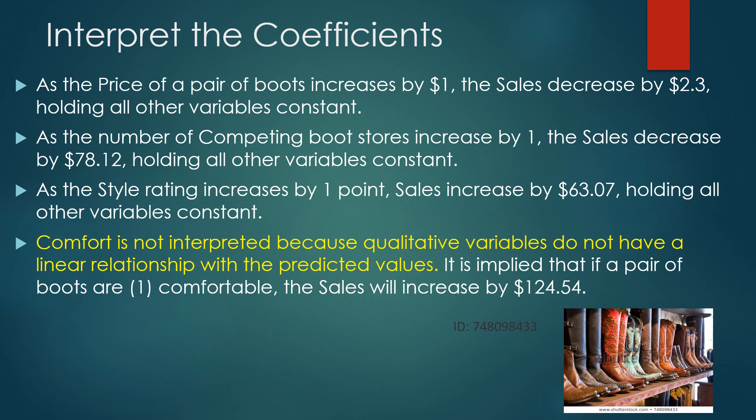When we interpret those coefficients in the model, it's just like we did in Chapter 3, except we'll tag on holding all other variables constant. So as the price of a pair of boots increased by $1, the sales decreased by $2.3, holding all other variables constant. As the number of competing boot stores increased by 1, the sales decreased by $78.12, holding all other variables constant. As the style rating increases by 1 point, sales increased by $63.07, holding all other variables constant.